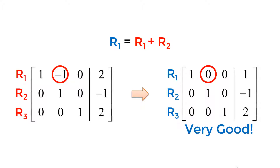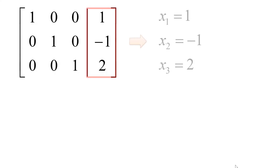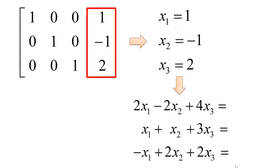Congratulations! You successfully reached the reduced row echelon form. This is probably the most enjoyable part — you can simply read off the numbers on the right side of the vertical bar as a solution: x1 equals 1, x2 equals minus 1, x3 equals 2. To ensure you got the right solution, you can plug them into the system of linear equations. If you get 12 from the first equation, 6 from the second, and 1 from the third, your calculations were perfect.